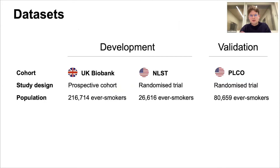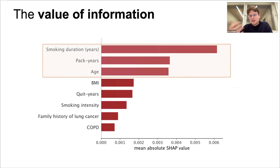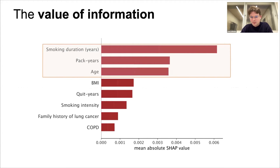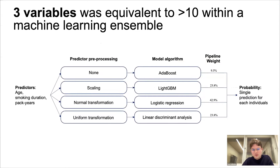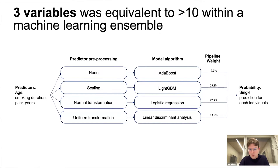We used UK Biobank data again, mixed with a randomized trial from the US which was a higher-risk cohort, then further validated in a separate US cohort. We were interested in developing a UK-specific but generalizable model. One of the first things we found when debugging was that almost all predictions were determined by three factors. We then tested the model using just those three factors and found that those three variables within this machine learning ensemble matched or exceeded several models currently in use — all of which have 10+ predictors.